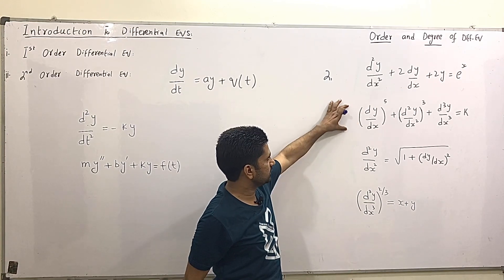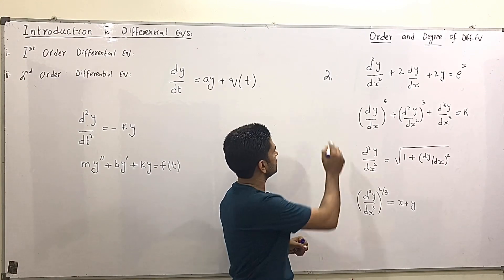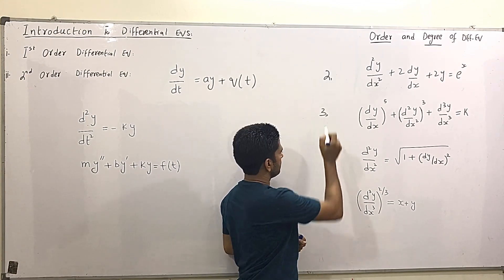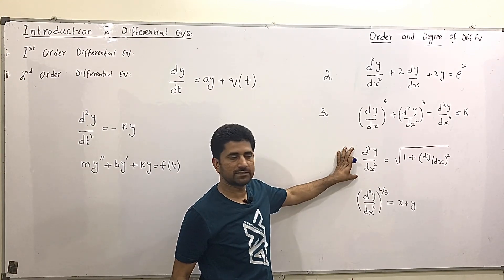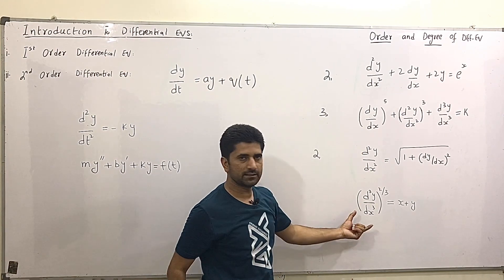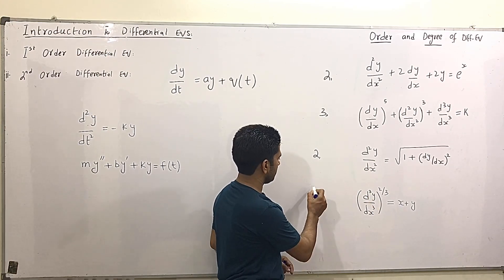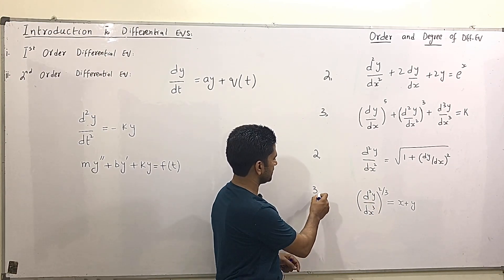And in this one the highest derivative is third. So order of this differential equation is 3. And here the highest derivative is second. So the order is 2. Similarly here the highest derivative is third. So we have third order differential equation.